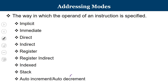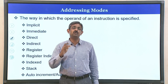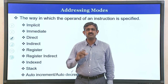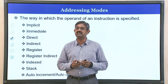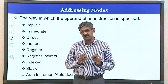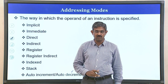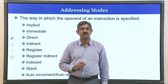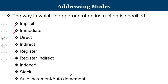We now move into the next topic: addressing modes. We have already learned about categories of instructions and the instruction set architecture. Addressing mode is the way in which the operand of an instruction is specified. We know that an instruction consists of opcodes and operands. The various kinds of addressing modes are: implicit, immediate, direct, indirect, register, register indirect, indexed, stack, and auto-increment and decrement addressing modes.